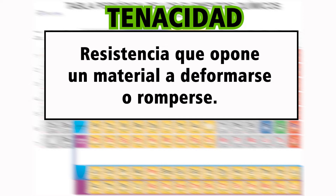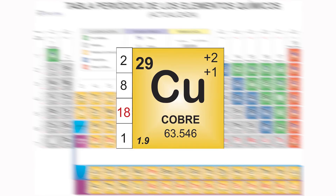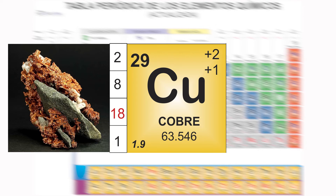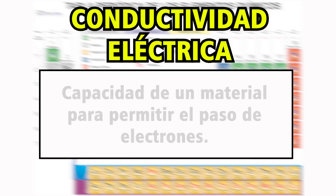Otra propiedad de los metales se llama ductilidad. Se dice que un metal es dúctil cuando éste puede ser estirado, normalmente con calor de por medio, a tal grado de que éste termine formando hilos. Mientras más lo estiramos, más largo será el hilo o el alambre. Definitivamente, uno de los metales más dúctiles es el cobre, con el que se fabrican los alambres de los cables. El cobre también es uno de los metales que mejor permite el paso de la corriente eléctrica. A esta propiedad se le llama conductividad eléctrica.